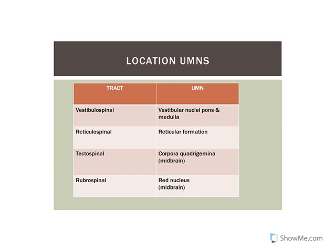The second comparison is where the upper motor neurons are located. All four tracts have upper motor neurons within the brainstem — not in the primary motor cortex. The vestibulospinal tract cell bodies are within the pons and medulla. The reticulospinal tract originates in the reticular formation, which runs all along the brainstem. The tectospinal tract and rubrospinal tract are both found in the midbrain — the tectospinal within the corpora quadrigemina, and the rubrospinal within the red nucleus (rubro means red). The vestibulospinal, reticulospinal, and tectospinal tracts are part of the medial pathways; the rubrospinal tract is part of the lateral pathway.